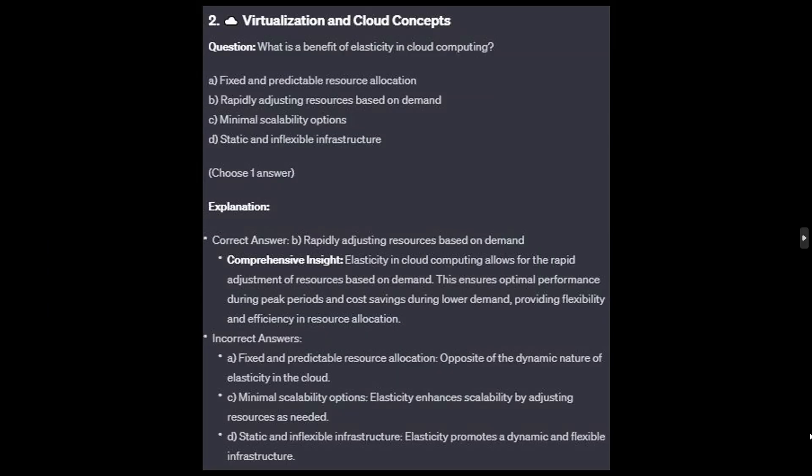The correct answer is B: rapidly adjusting resources based on demand. Elasticity in cloud computing allows for the rapid adjustment of resources based on demand. This ensures optimal performance during peak periods and cost saving during lower demand, providing flexibility and efficiency in resource allocation.